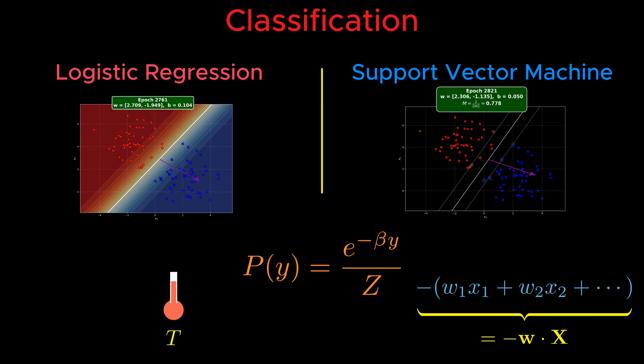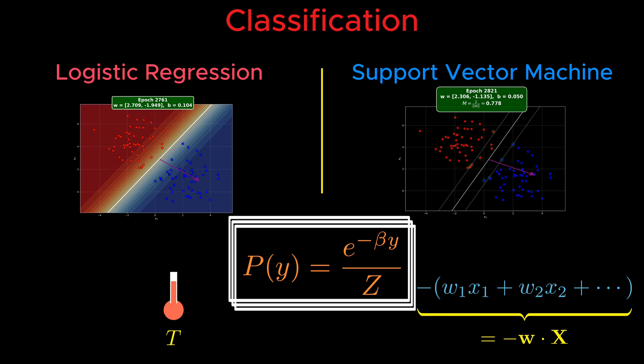Where X represents a data point and W represents the model's parameters. The normalization constant Z, called the partition function, ensures that all probabilities add up to one. Even though logistic regression and SVM share this probabilistic foundation, they differ in how they measure and minimize the cost of being wrong, that is, in their loss functions.